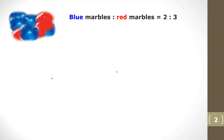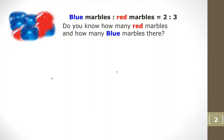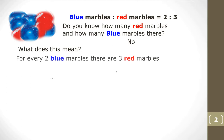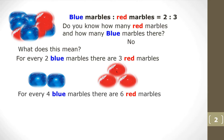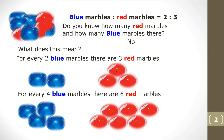Here there are some red marbles and some blue marbles. The ratio of blue marbles to red marbles is 2 to 3. Do we know how many red marbles and how many blue marbles there are? No, we don't. All we know is the ratio. This means that every 2 blue marbles there are 3 red marbles. Or every 4 blue marbles there are 6 red marbles. Or it can be 20 blue marbles and 30 red marbles. But we don't know exactly how many there are.